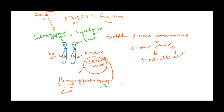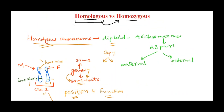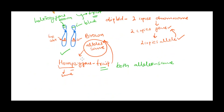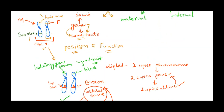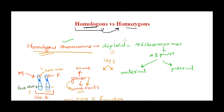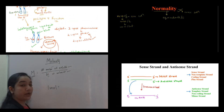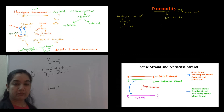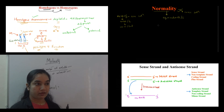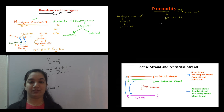So homozygous is a condition where for a given particular trait, both alleles are the same. Homologous refers to chromosomes — when we're talking about chromosomes that contain genes for the same traits at the same position. Homozygous refers to a particular genotype for a given trait where both alleles are the same. That's all for now — I hope this video was helpful. Do subscribe to the channel for a new video every week, and I'll see you next time. Until then, keep learning.